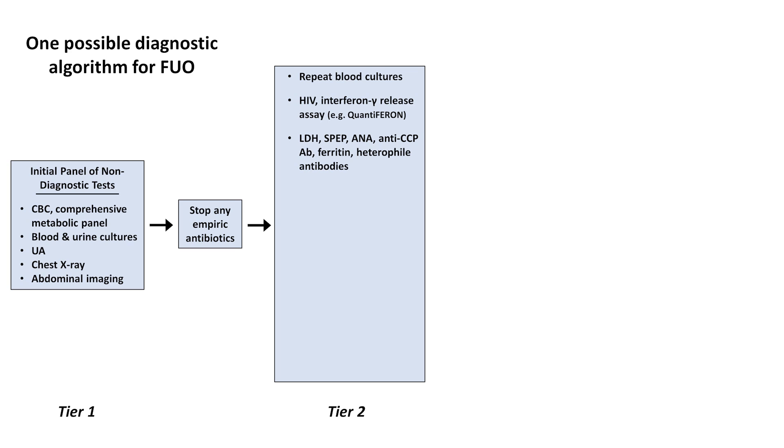It's very commonly recommended to check an ESR and CRP, but I personally do not find these to be diagnostically helpful. They are very nonspecific markers of inflammation, which are elevated in almost every etiology of FUO, so I would not check them, but know that 9 out of 10 doctors would. A CT of the chest can identify small abscesses missed on x-ray, as well as hilar and mediastinal lymphadenopathy that could suggest malignancy or sarcoidosis.